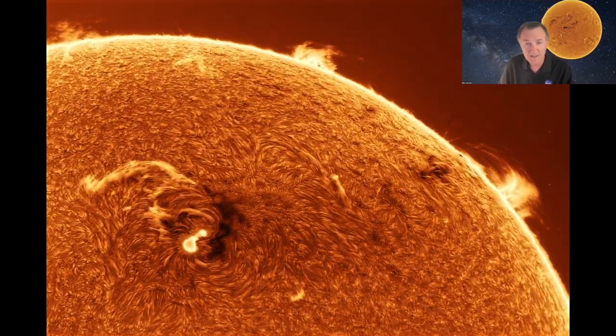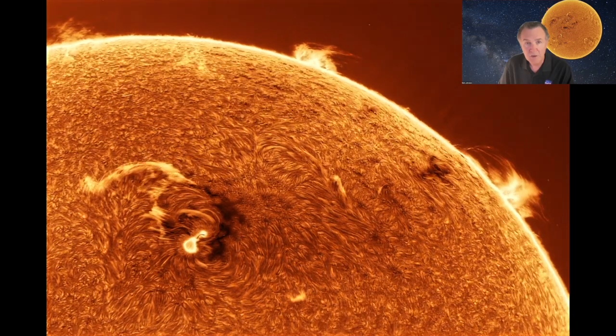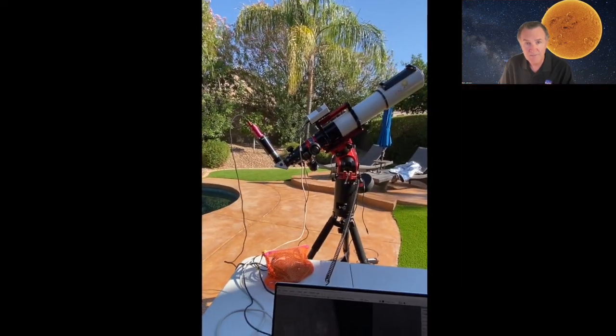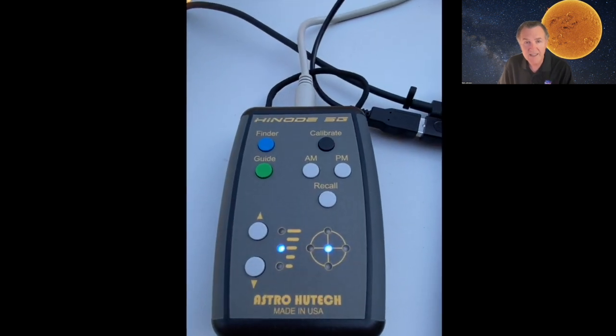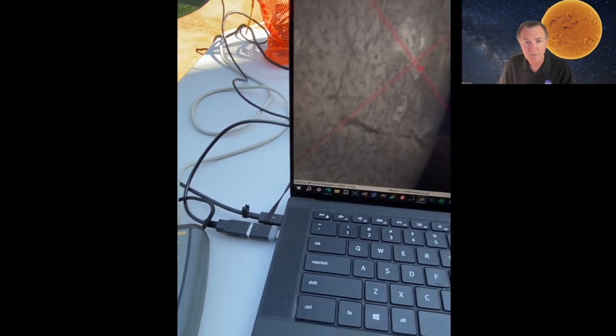You can't guide on the sun like you do at night because no other stars are visible. You need a special guiding device like the Hynodé Guider. This requires an ST4 guide port which the AM5 supports.